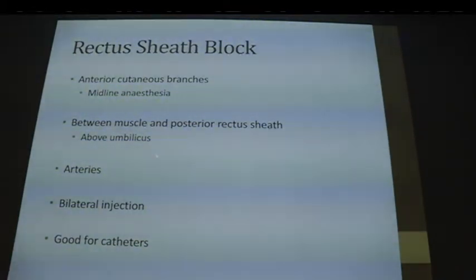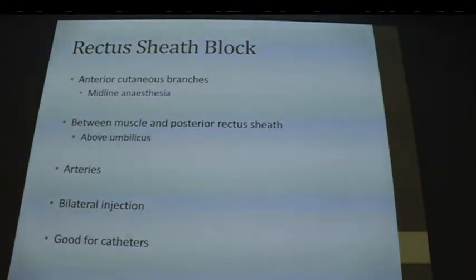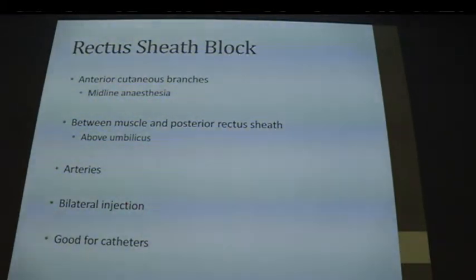Rectus sheath blocks target the anterior cutaneous branches for midline anaesthesia. You place local anaesthetic between the rectus muscle and the posterior rectus sheath. You must do this above the umbilicus because the posterior rectus sheath is absent below the arcuate line — around the level of the umbilicus — where you only have transversalis fascia, fat, and peritoneum. Be very careful of the arteries within the rectus sheath, and for midline laparotomy you'll need bilateral injections. This block is excellent for catheters because it's a very clean plane that opens up easily.